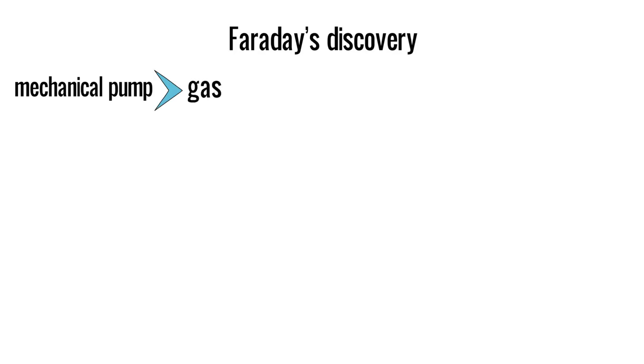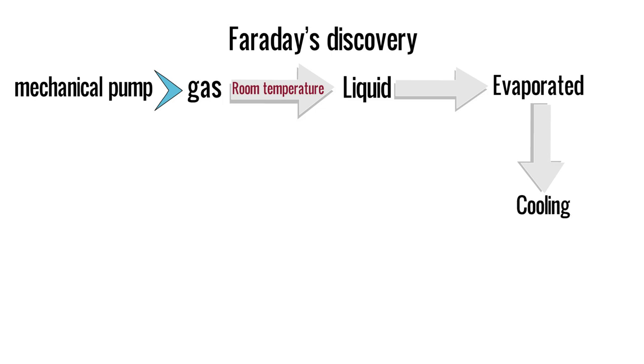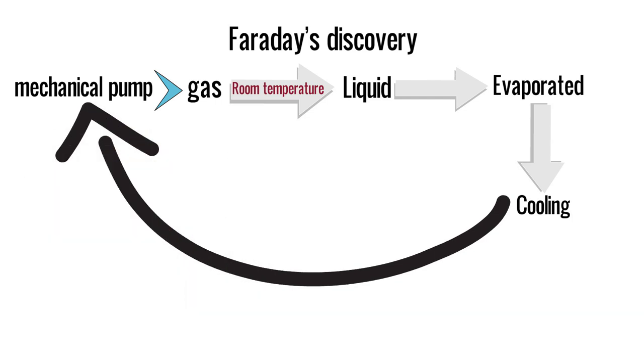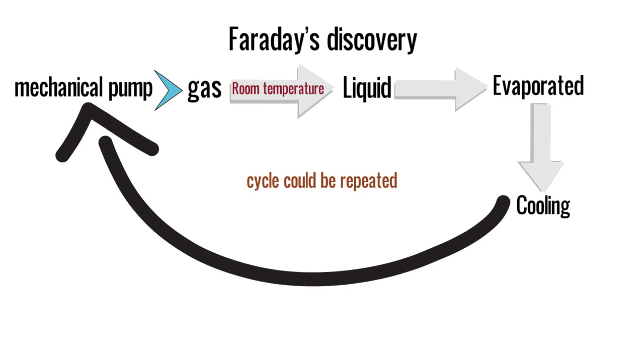The importance of Faraday's discovery was that he had shown that mechanical pumps could transform a gas at room temperature into a liquid. The liquid could then be evaporated. So just because of evaporation, there will be cooling of its surroundings. And then again resulting gas could be collected and compressed by a pump into a liquid. Then the whole cycle could be repeated. This is the basis of how modern refrigerators and freezers work.